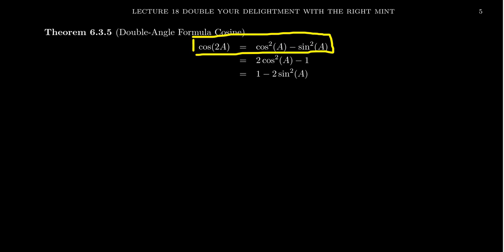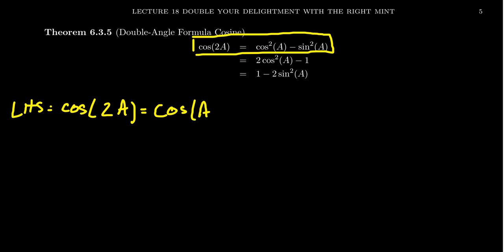Cosine of 2a is equal to cosine squared of a minus sine squared of a. To see that, let's take the left-hand side, which is equal to cosine of 2a. I'm going to treat this as if it's an angle sum identity where I use the same angle twice, so we think of this as cosine of a plus a.